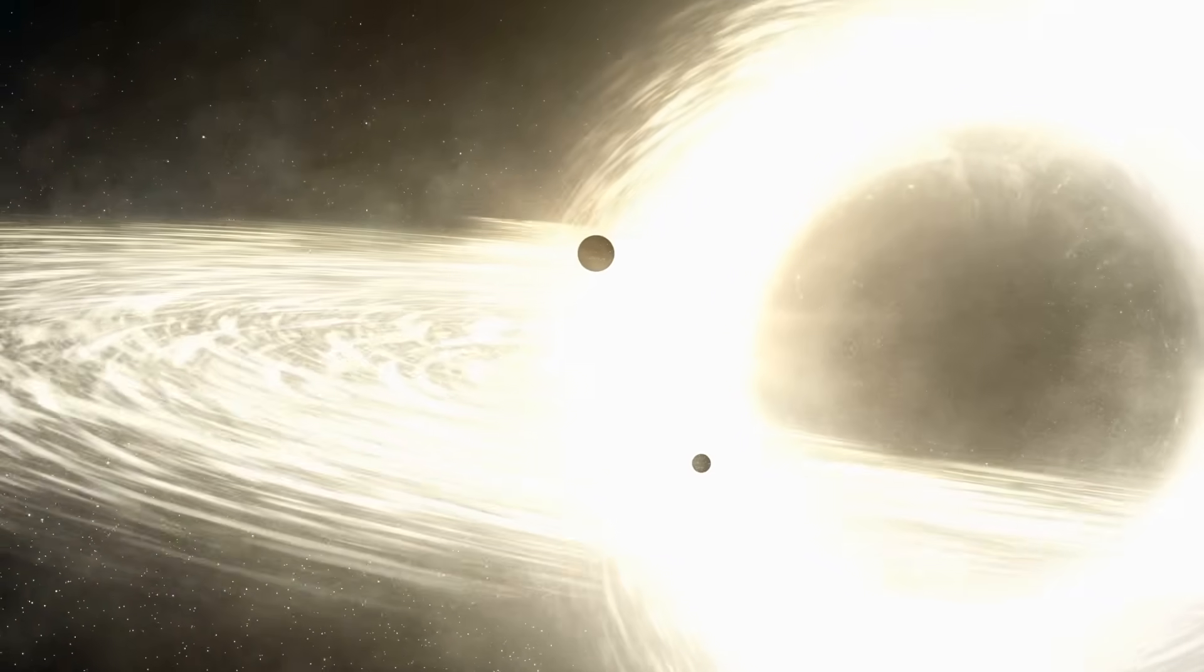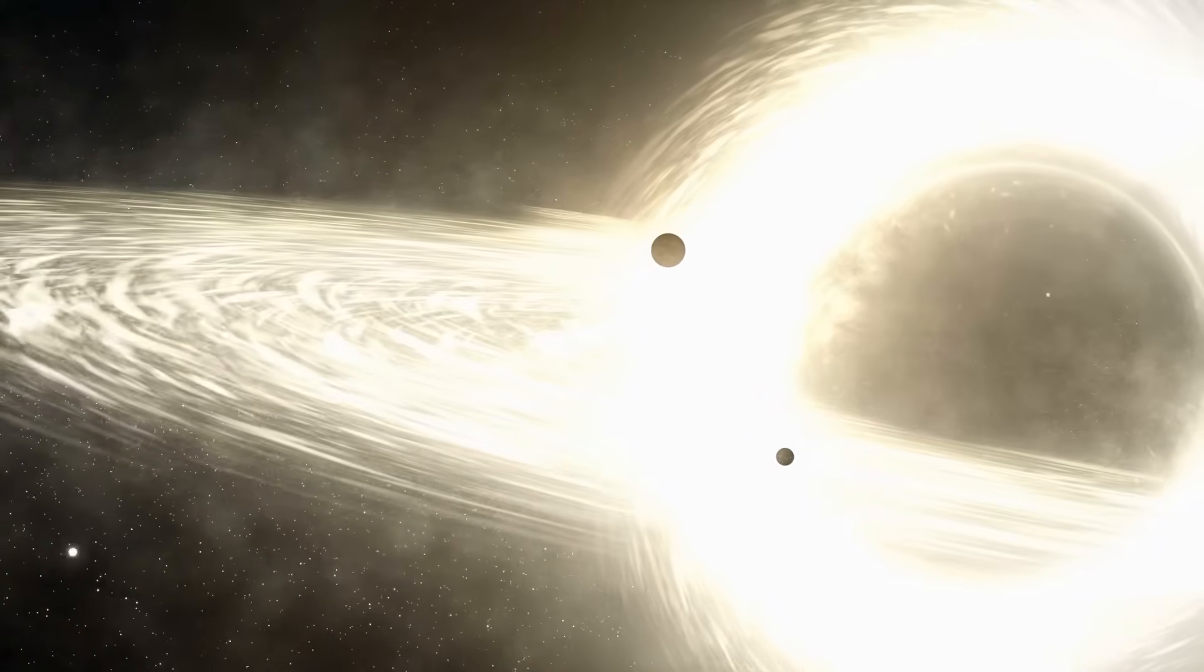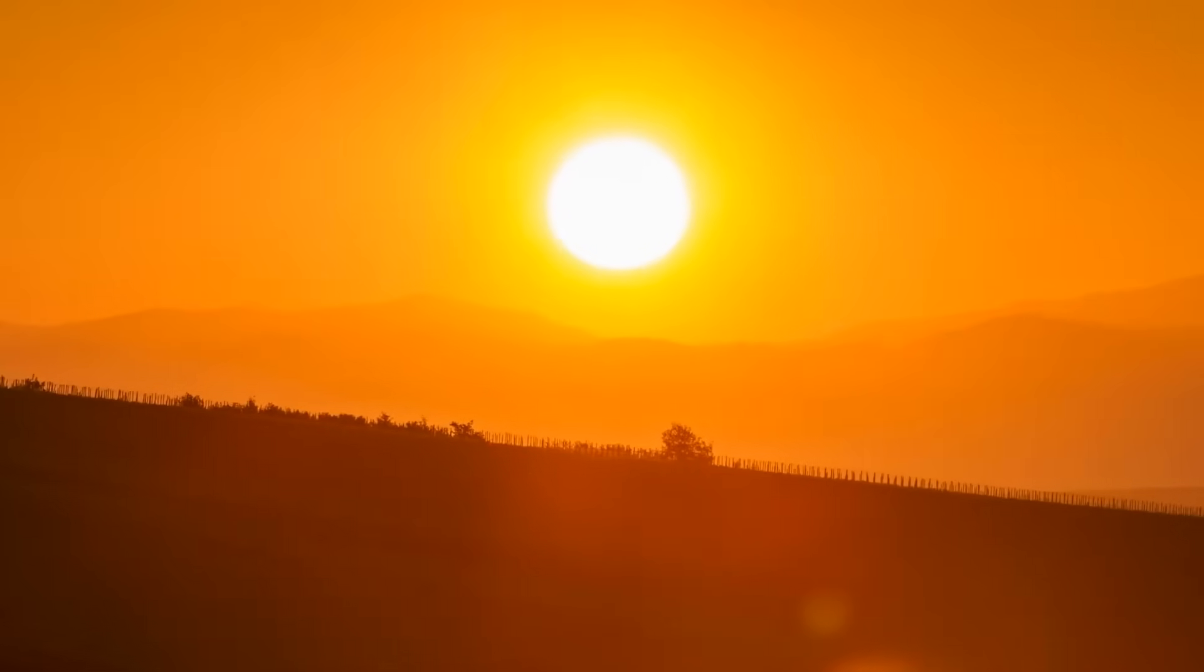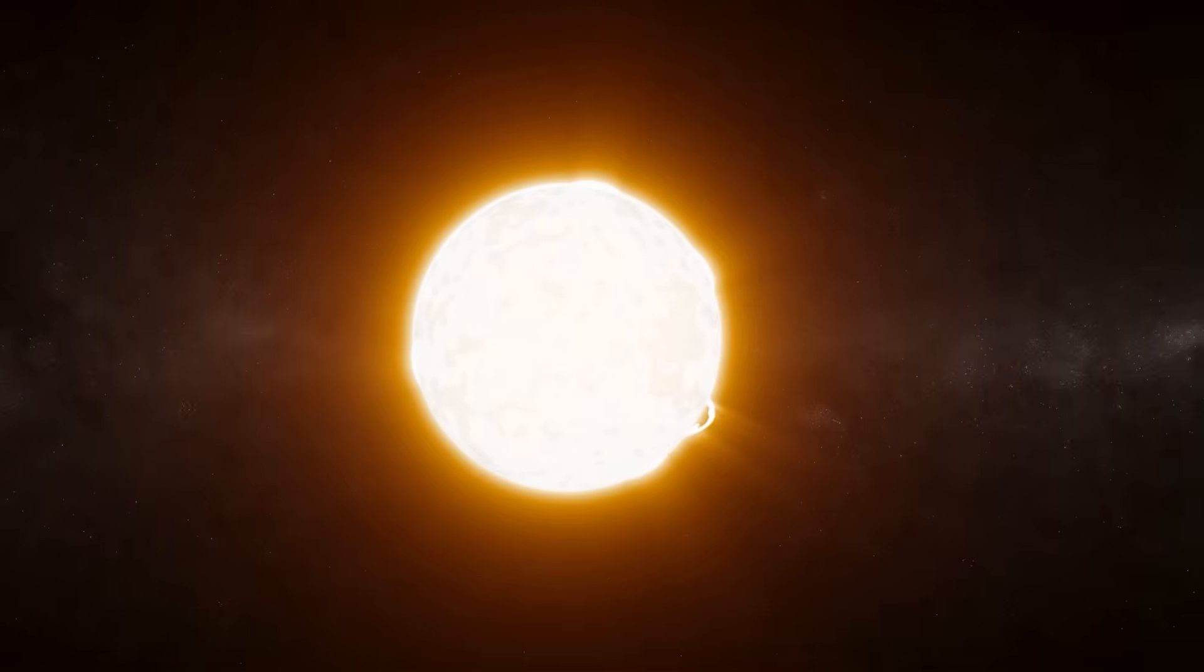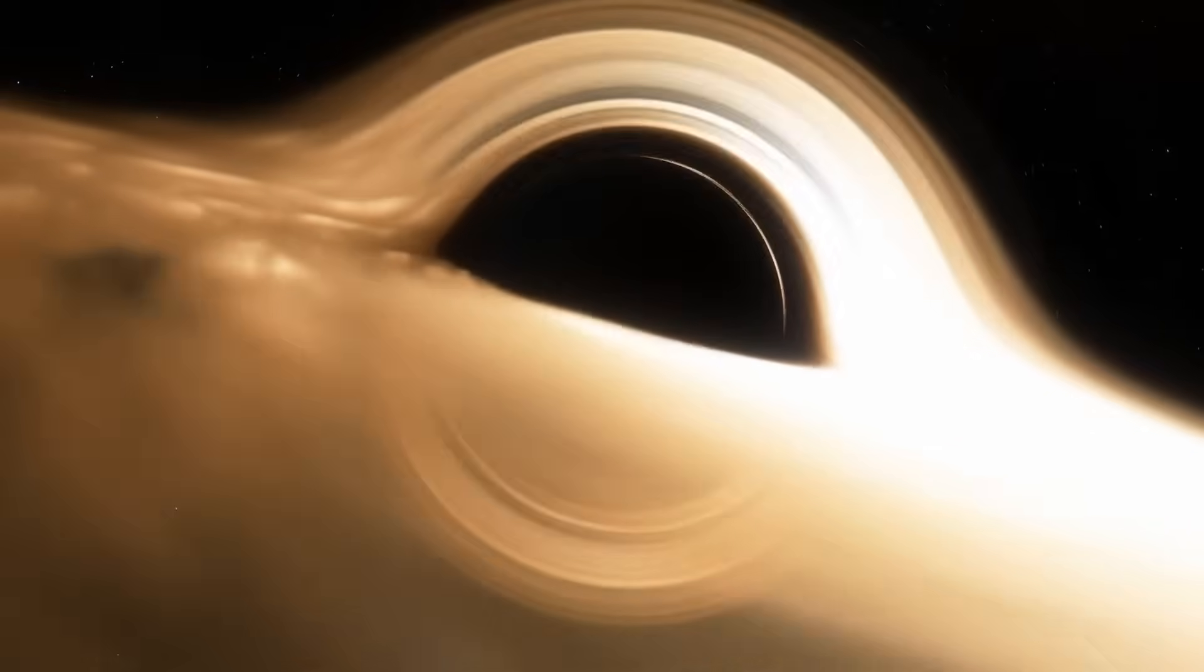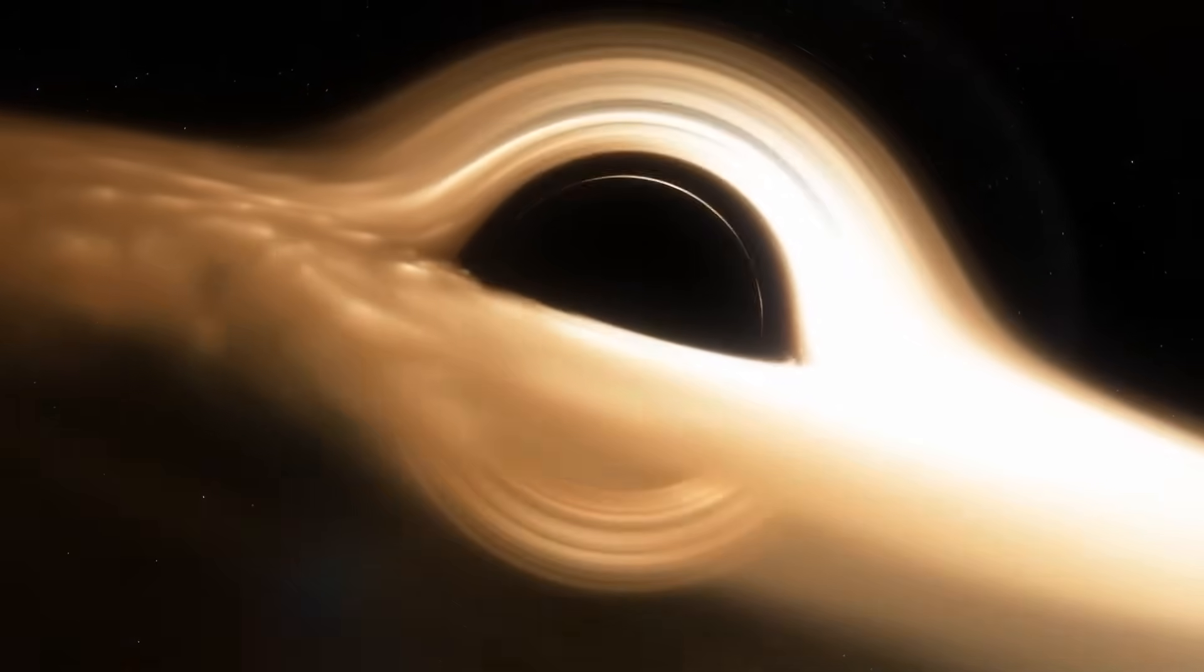Our Sun has a mass of approximately 1,989 octillion kilograms. That's 1,989 with 27 zeros. So this black giant has a mass of approximately 5,967 followed by 40 zeros. Now you surely want to know where this black hole was discovered and whether it can just happen to fly by.